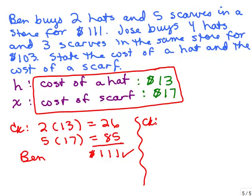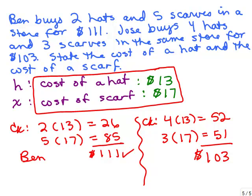Now let's check Jose. Jose's cost, he bought four hats. Each hat was $13, so he paid $52 for the hats. And he bought three scarves, each scarf was $17, so he paid $51 for the scarves. And if we add that up, we get $103, and yes, it does state that he spent $103. So it checks out. Therefore, this is our answer: the cost of a hat is $13 and the cost of a scarf is $17.